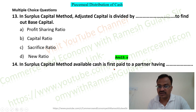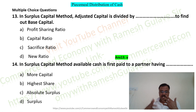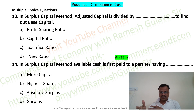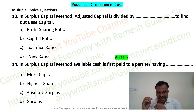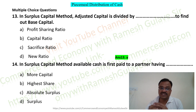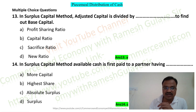Question 14: In surplus capital method, available cash is first paid to a partner having dash. Options are: more capital, highest share, absolute surplus, surplus. After paying third party liabilities, the remaining cash is paid to partners. In surplus capital method, we find the absolute surplus and cash is paid first to that partner who has absolute surplus, so option C is the right answer.